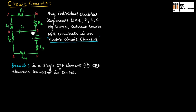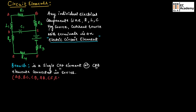Similarly, we have CD, AD, EF, and DE as branches of the circuit. So from the example circuit, we can say AB, BC, CD, AD, CF, EF, and DF are branches of the circuit.